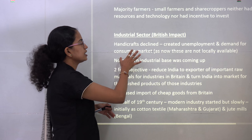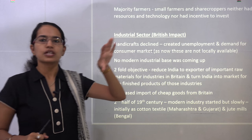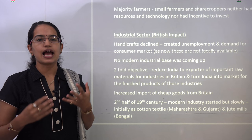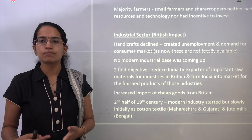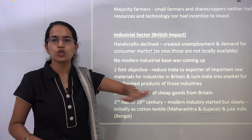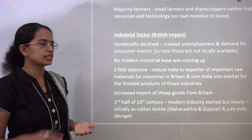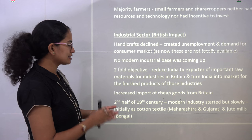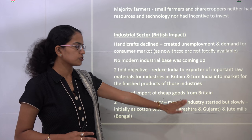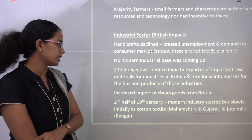Regarding industries, handicrafts declined because British industries were producing the same goods at lower prices and importing cheap products into the Indian market. There was no solid modern industrial base established in India, and no capital goods industry came up. The only industries that emerged were cotton textile in Maharashtra and Gujarat, and jute mills in Bengal, and that too only during the second half of the 19th century.